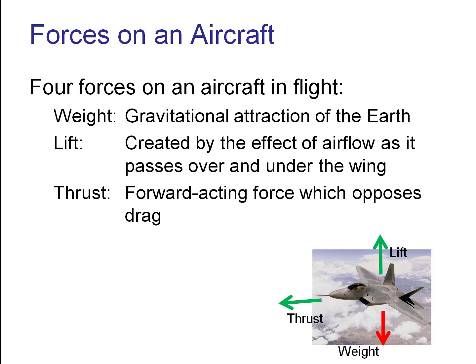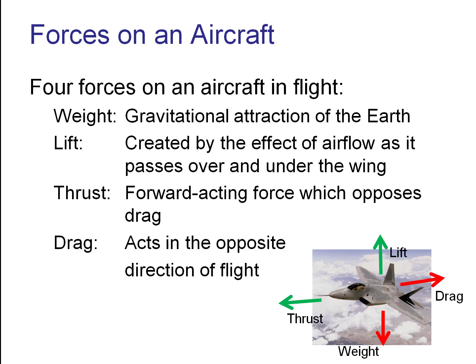Thrust is created by the engine — it opposes drag but really accelerates the airplane forward; it's how we take off. Drag is the force acting opposite to thrust. Drag has a couple of different components: we've got drag caused by the airplane's shape, called planform drag, and we also have induced drag, which is created by the movement of air as we create lift.